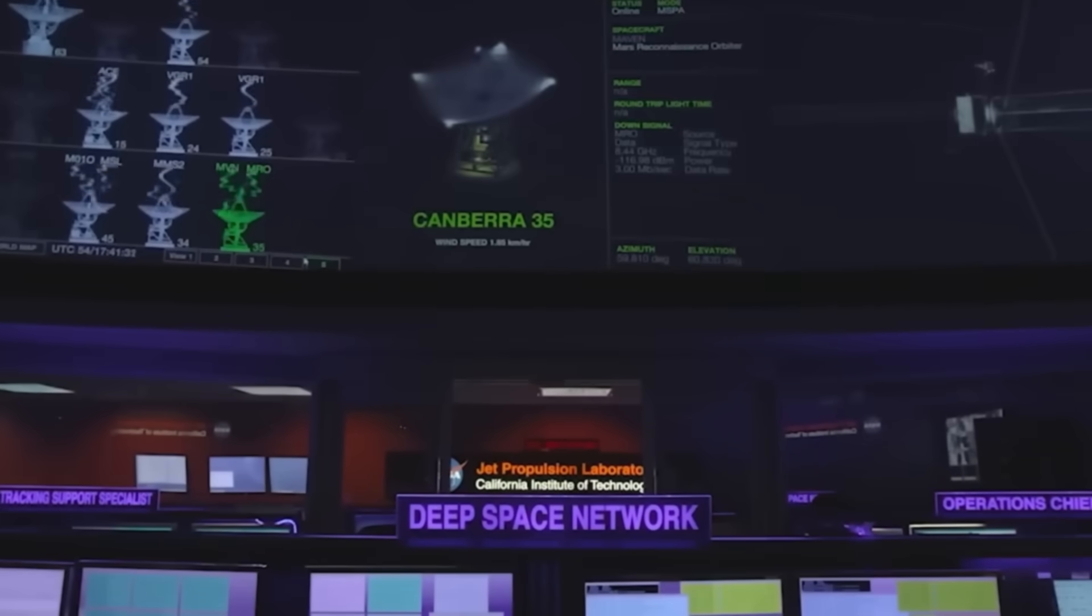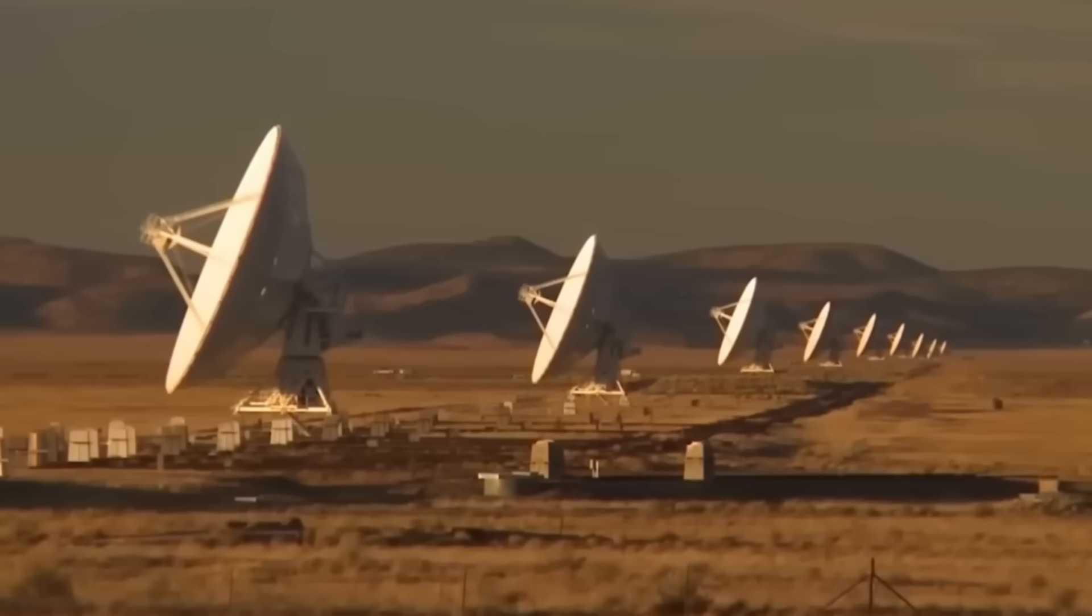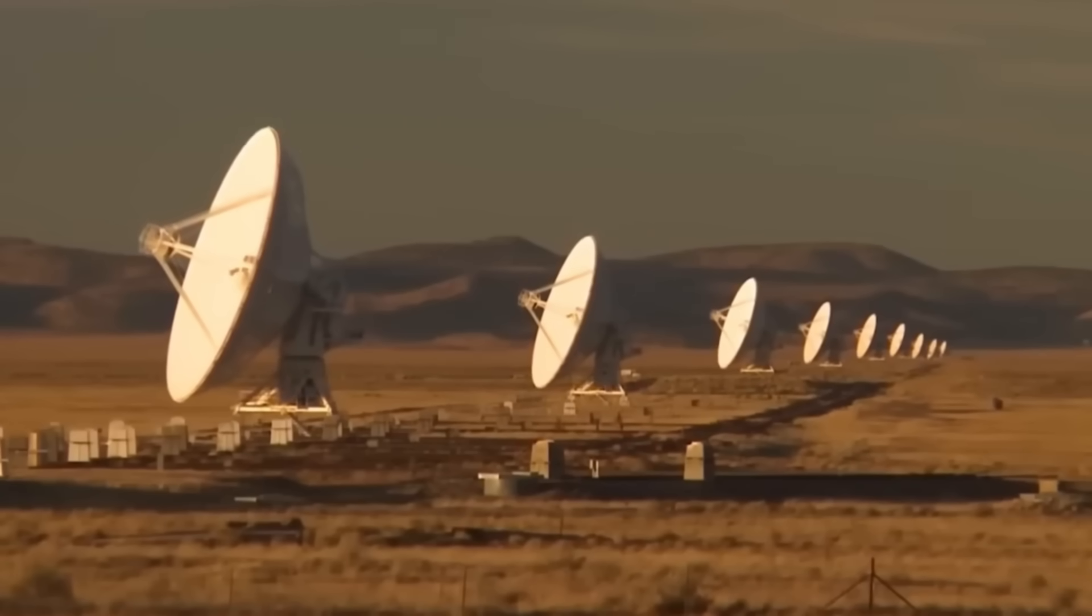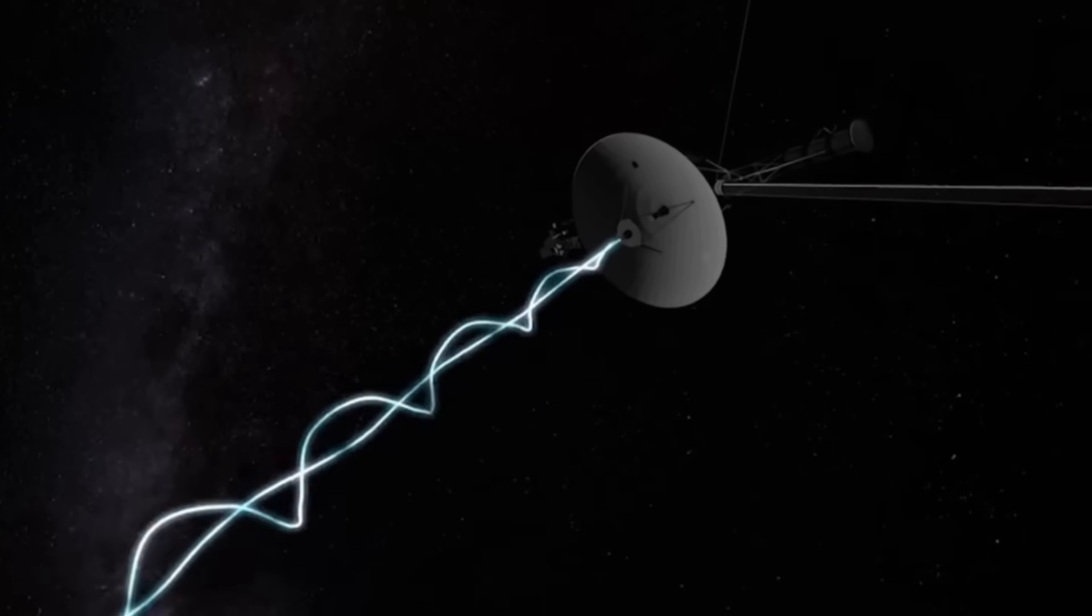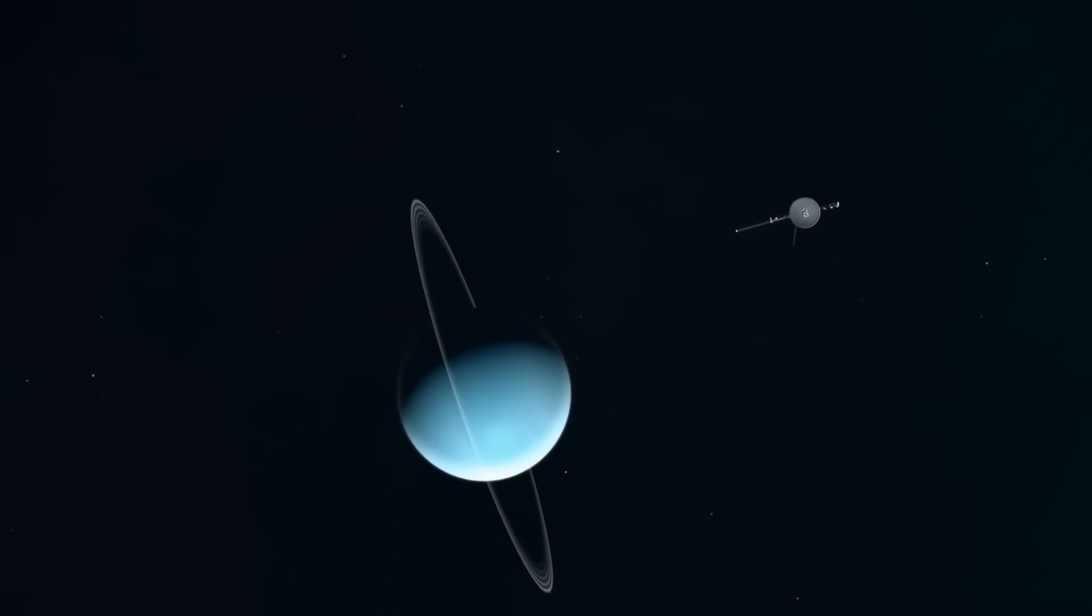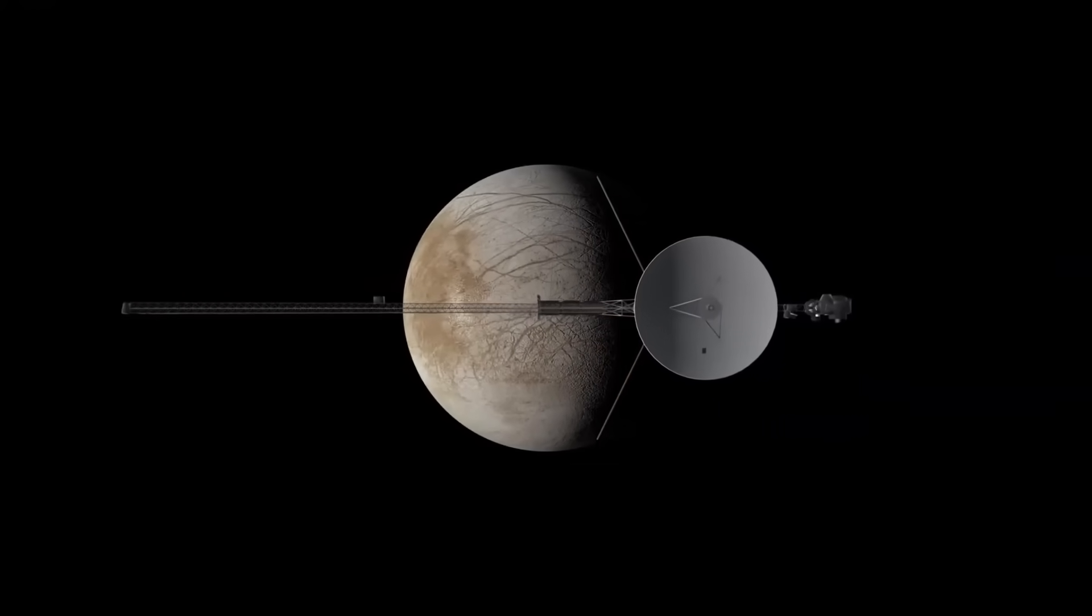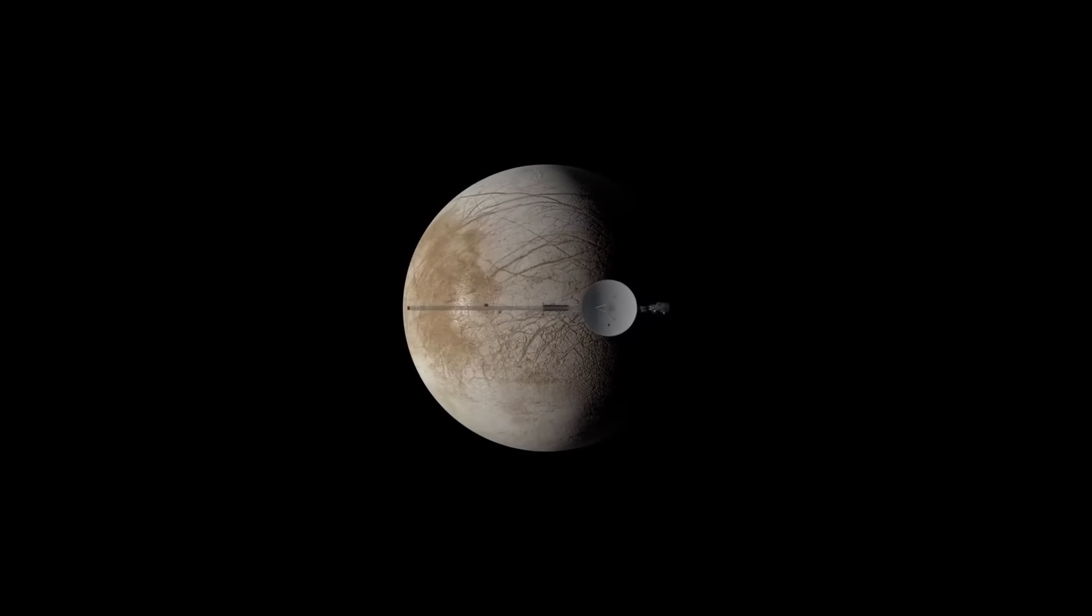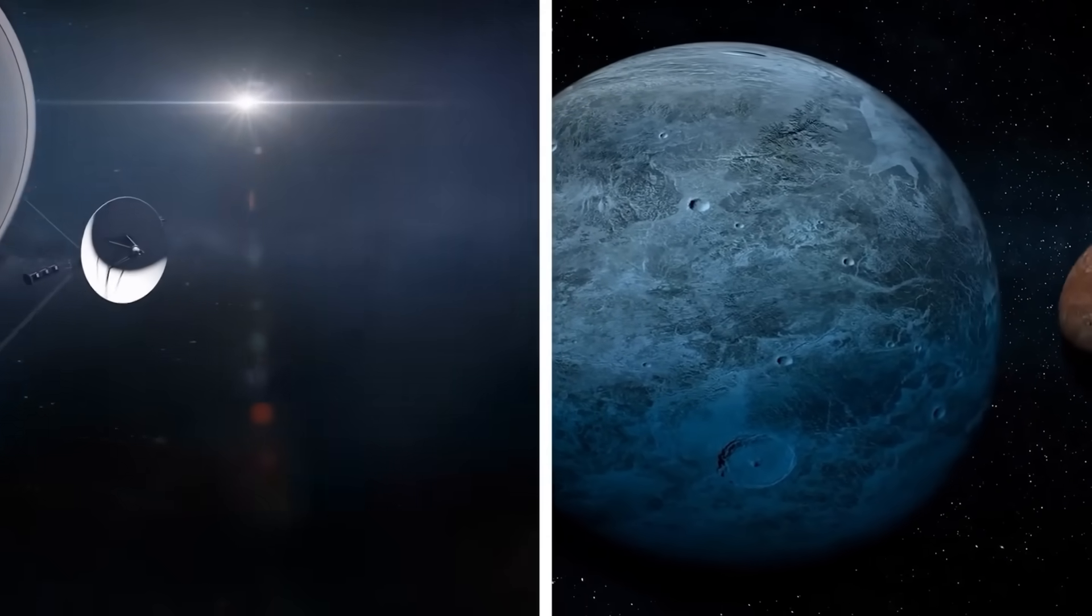The Voyager probes traveled to Saturn after Jupiter, revealing the planet's many moons and the exquisite beauty of its rings. The information broadened our knowledge of what planetary systems can look like, from the glistening icy particles in the rings to the intriguing geology of moons like Titan and Enceladus. Due to its unusual course, Voyager 2 visited Uranus and Neptune, two planets that were still unknown prior to these missions, in addition to Saturn.